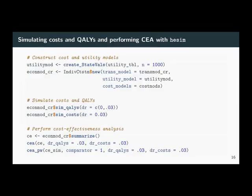Once you have your utilities and costs set up, you can create your full economic model. You create a utility model from those parameters, do the same for costs, and then the full economic model consists of the transition model created earlier plus your utility and cost models. We previously simulated disease progression, so once we've done that we can simulate costs and utilities using the sim qualities and sim cost functions. We can set flexible discount rates — no discount rate or the standard 3%.